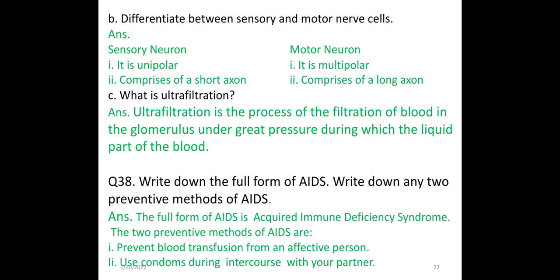Write down the full form of AIDS and any two preventive methods. The full form of AIDS is Acquired Immune Deficiency Syndrome. Two preventive methods: 1. Prevent blood transfusion from an infected person. 2. Use condoms during intercourse with your partners.